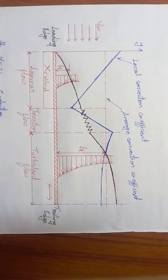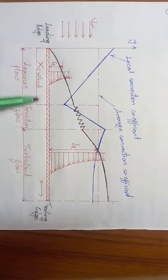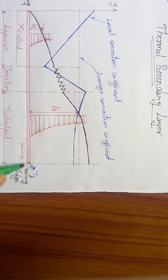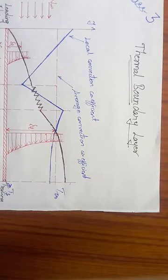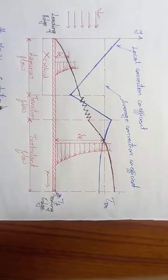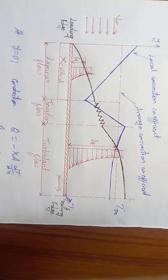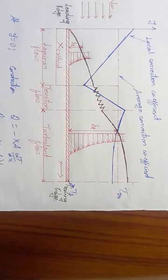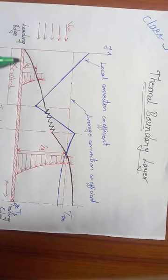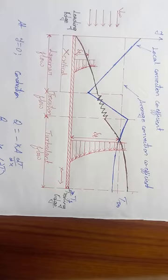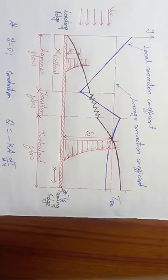Since it is by conduction, we can apply Fourier's law of conduction: Q = -kA × dT/dx. Applying the same law here, Q/A = -k_fluid × ∂T/∂y, where k_fluid is the thermal conductivity of the flowing fluid. The temperature change is considered along the y-direction only for that thin fluid layer.